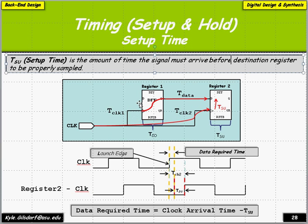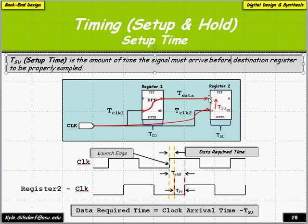We have a source clock here, and the destination clock is our reference point. When the clock arrives, we must be stable some setup time before. So if the clock arrives at 20 nanoseconds and our setup requirement time is 5 nanoseconds, we have a data required time of 15 nanoseconds. That means we have 15 nanoseconds to get from the clock through the data or combinational logic to the flip-flop, arriving 5 nanoseconds early — that is called the data required time.